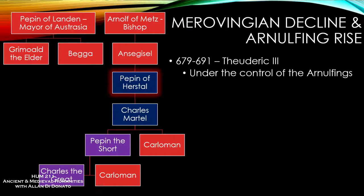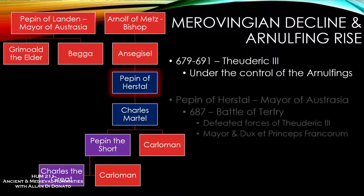Pepin of Herstal is the one we pick up with because he was really important in coming to dominate the Franks. If you follow his lineage, you hit Charles Martel, Pepin the Short, and then Charles the Great — the next three figures we need to concentrate on. These are the big names in Frankish history.